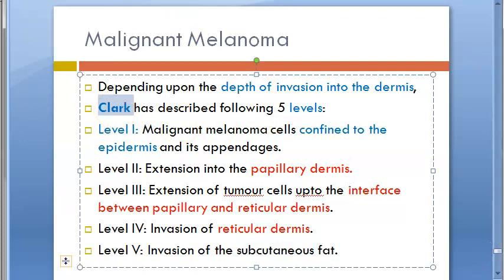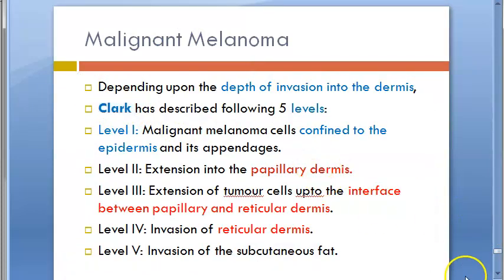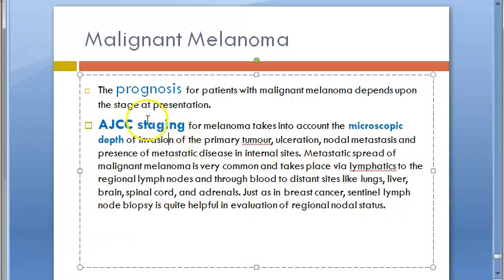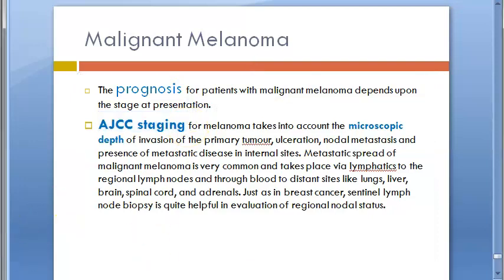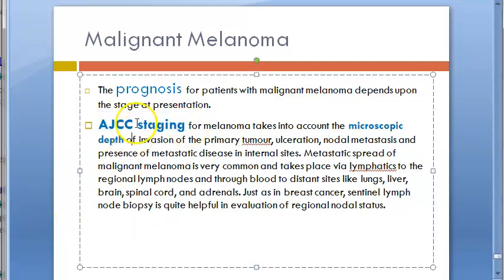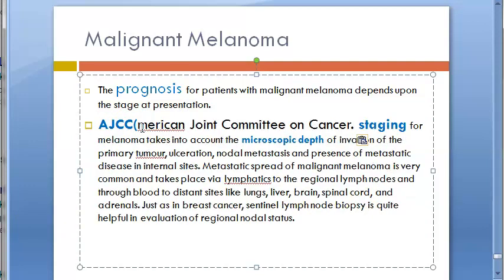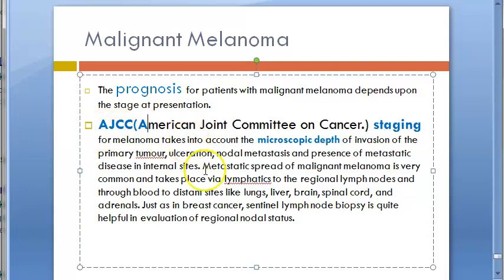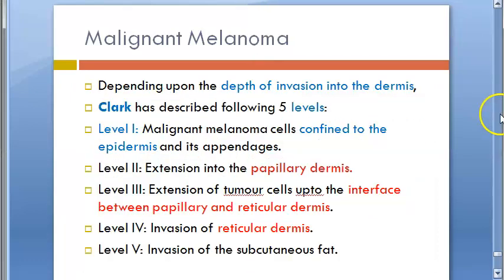For staging, you have AJCC staging — the American Joint Committee on Cancer — which decides the prognosis. This is the microscopic depth. The AJCC staging is used for many cancers and it also uses the TNM staging information.